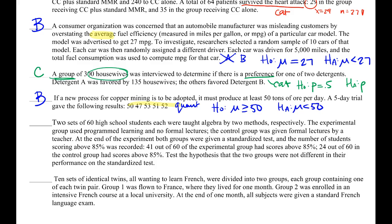Two sets of high school students were each taught algebra by two methods. The experimental group used programmed learning with no formal lectures; the control group received formal lectures from a teacher. At the end, both groups were given a test and the number of students scoring above 85% was recorded. The test score itself would have been quantitative, but we're interested in the percent scoring above 85 — a categorical yes/no variable. So our hypotheses compare the proportion in the experimental group versus the control group, giving us answer F, the two-proportion test.